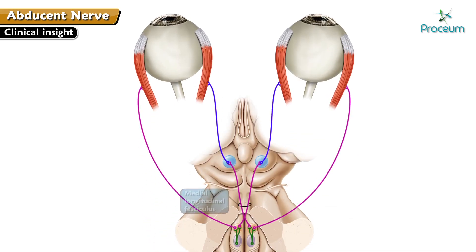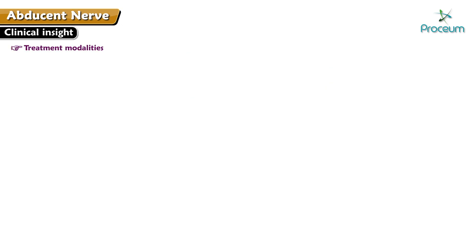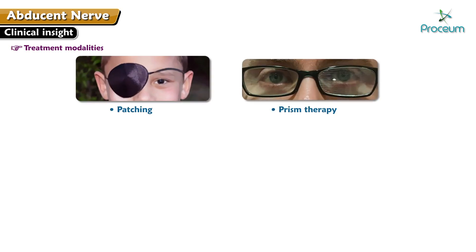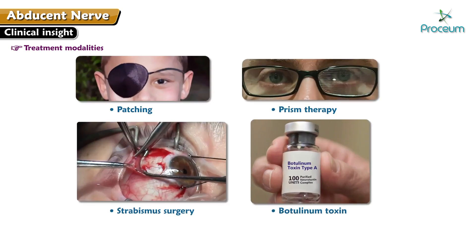Lesions of the MLF cause medial rectus weakness. Most isolated 6th nerve palsies will recover spontaneously. Treatment modalities for those with persistent disability may include patching, prism therapy, strabismus surgery, and botulinum toxin. The goal is to maximize visual function, including the alignment of the eyes.